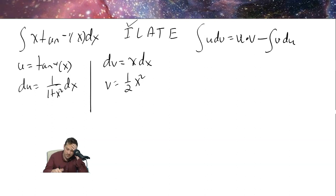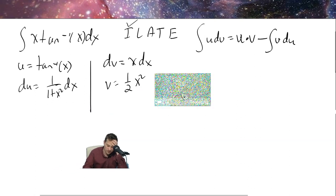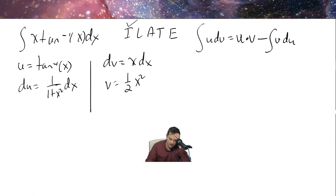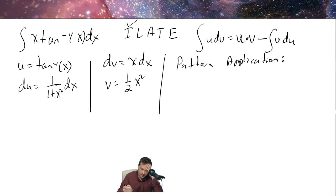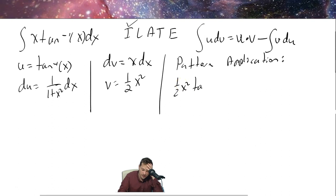Now let's apply the pattern. We have u times v: u is tan inverse of x and v is one-half x squared, so the first term is one-half x squared times tan inverse of x, minus the integral of v du.